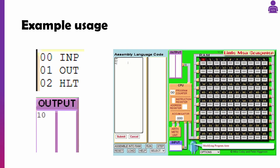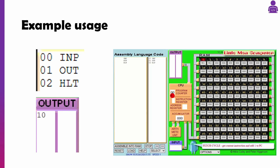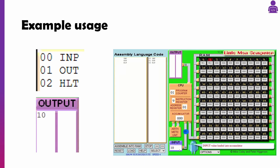Quite a quick video — I'm still trying to keep them nice and short. But that is input, output, and HLT in LMC for H446 A-level computer science. I'll see you in the next video.